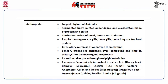Phylum arthropoda is the largest and most diverse phylum of animalia. They have segmented body, jointed appendages and exoskeleton made of protein and chitin. The body consists of head, thorax and abdomen. Respiratory organs are gills, book gills, book lungs or tracheal system. The circulatory system is open type, bathed in fluid called hemolymph. Sensory organs include antennae and both compound and simple eyes. Statocysts or balance organs are present. Excretion takes place through malpighian tubules. Examples include insects such as apis, bombyx and laccifer; vectors such as anopheles, culex and aedes; and gregarious pests including locusta and limulus.